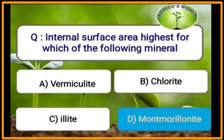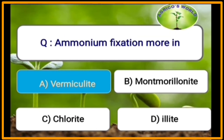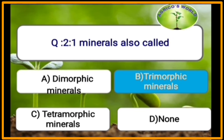Internal surface area is highest for montmorillonite. Total surface area is highest for kaolinite. Ammonium fixation is more in vermiculite. 2:1 minerals are also called trimorphic minerals.